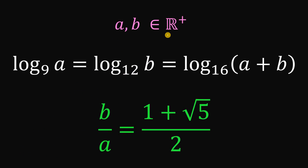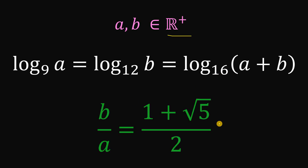Therefore, given that A and B are both positive real numbers and satisfy the equation logarithm of A to the base of 9 equals logarithm of B to the base of 12 equals logarithm of A plus B to the base of 16, the numerical value of B over A is simply equal to 1 plus square root of 5 over 2. And as always, we are done.